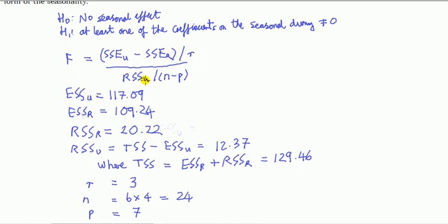Likewise, this is saying do this first, n minus p, and then RSS_U is divided by that. It's not RSS_U divided by n and then minus p, if you know what I mean.